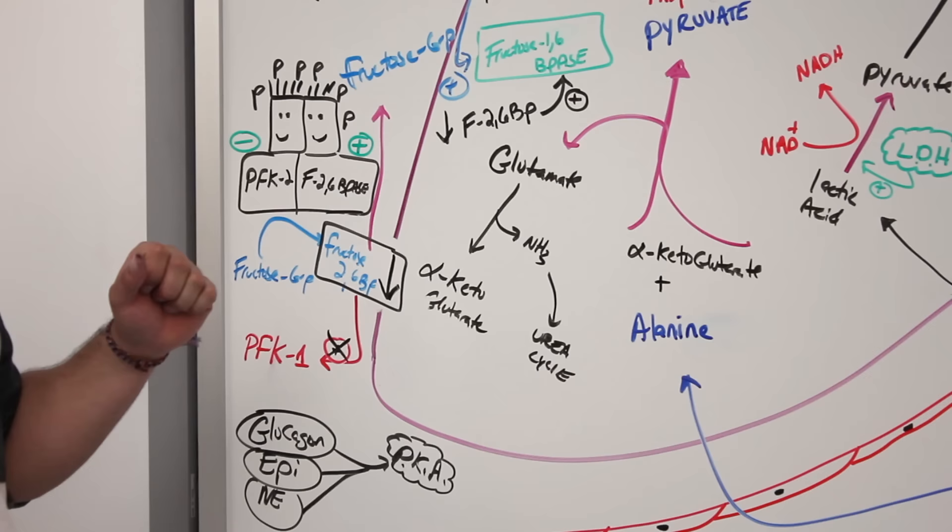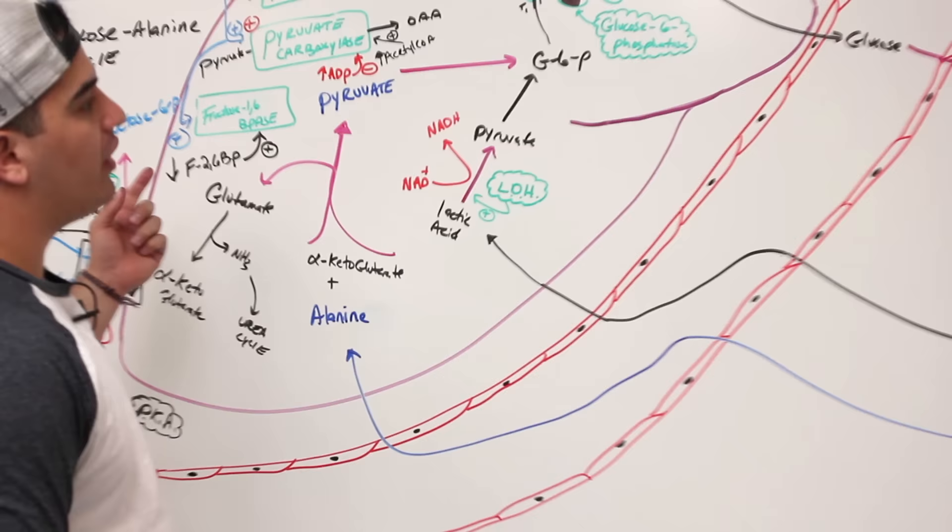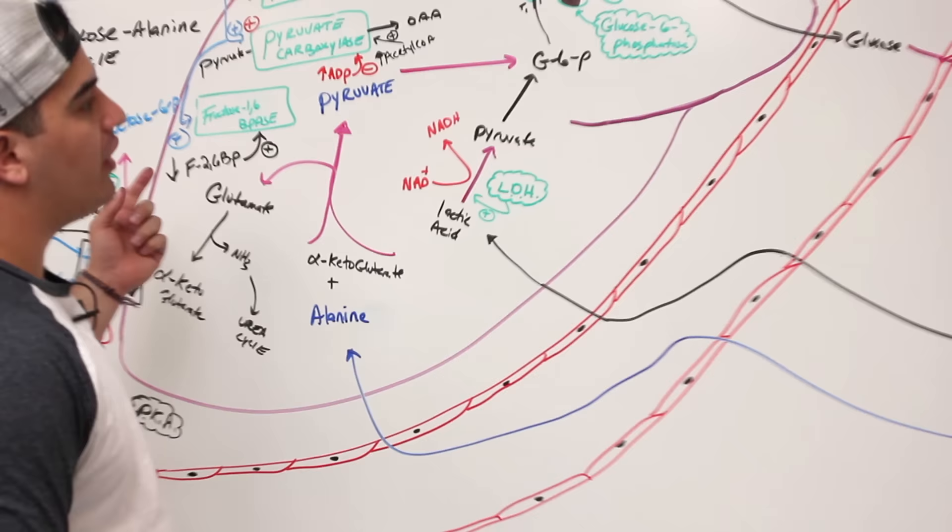We covered the regulation of gluconeogenesis, including the Cori cycle and the glucose-alanine cycle in this video. If you enjoyed it, hit the like button, subscribe, and comment down in the comment section.